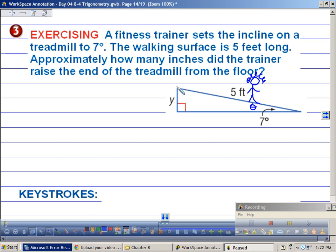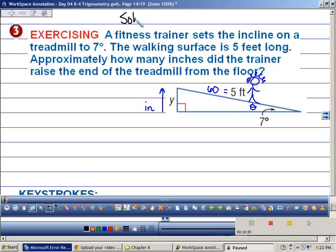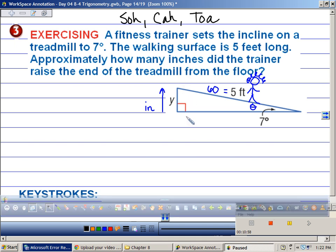The walking surface is 5 feet long. Right here. The little walking surface is 5 feet long. Approximately how many inches did the trainer raise the end of the treadmill from the floor? How far up is the treadmill off the floor? It asks me how many inches. Well, we've got feet right here, so we better change this to inches. How many inches are in 5 feet? 60 inches. So soh-cah-toa. Which one do I need? I have the opposite and I also have the hypotenuse. So which one do I need? Soh.